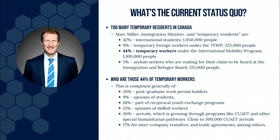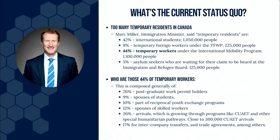Within that 44% of temporary workers: 26% are post-graduate work permit holders who were previously international students; 9% are spouses of international students; 10% are in reciprocal youth exchange programs like International Experience Canada; 12% are spouses of skilled workers; 26% arrived through humanitarian programs such as those for Ukrainians, Haitians, Turks, Syrians, Iranians, and Afghans; and 17% are intra-company transfers, trade agreement workers, and other business immigration categories.